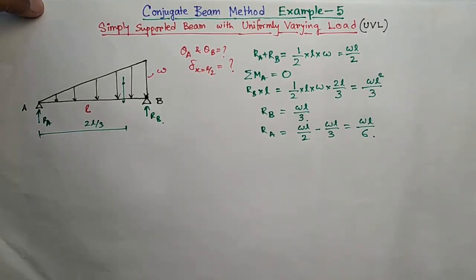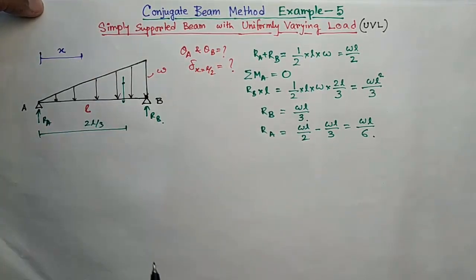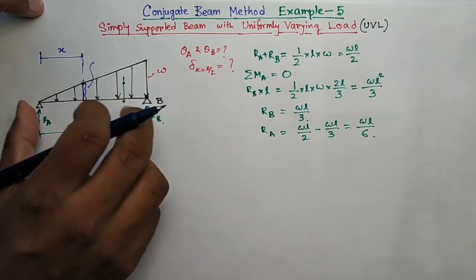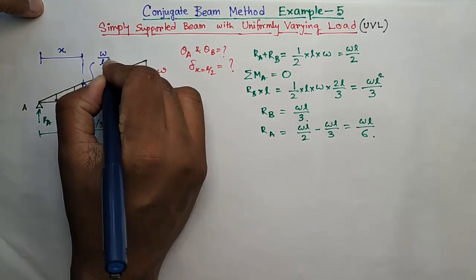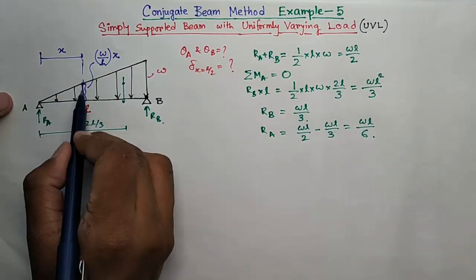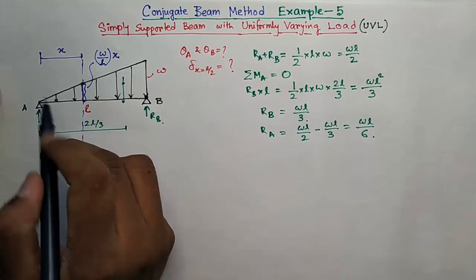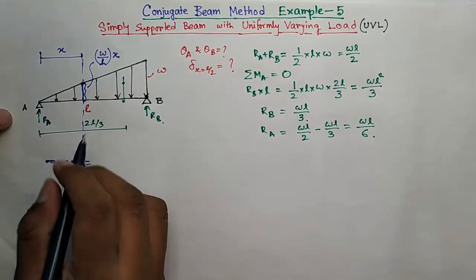Now find out the moment equation of this beam at any distance, say x. What will be this ordinate? It is W, it is L, so it will be W by L into x from similar triangles. This and this triangle are similar. The moment at distance x...